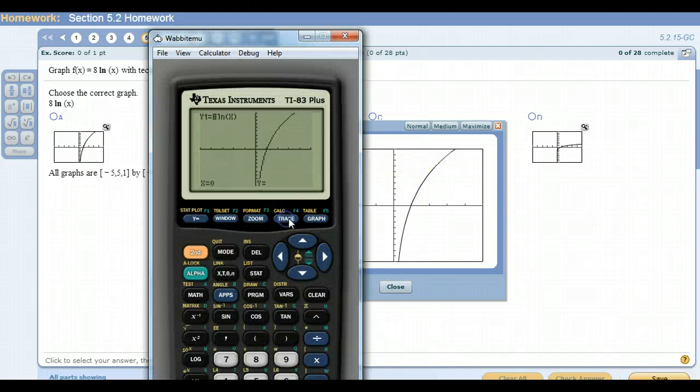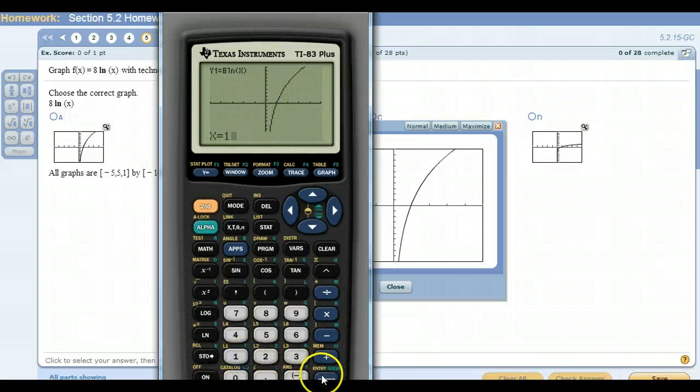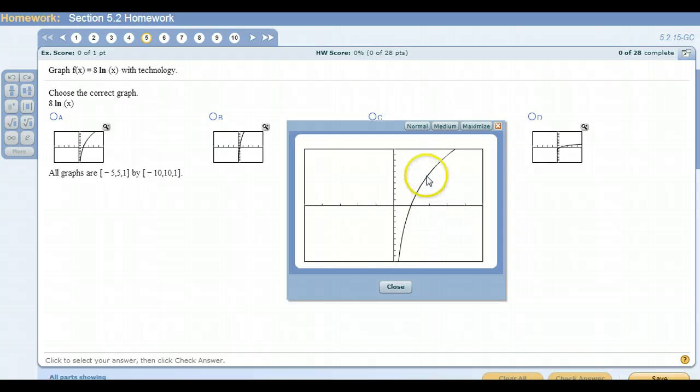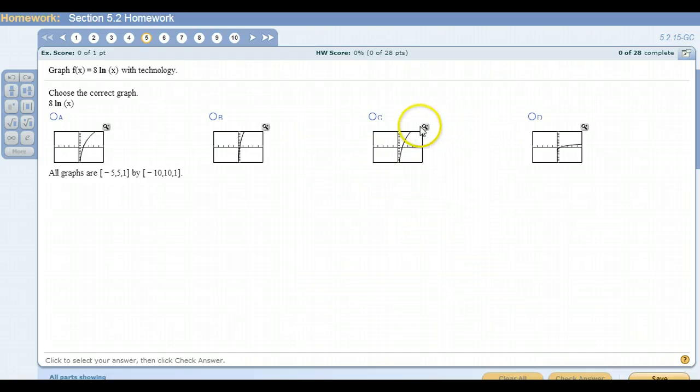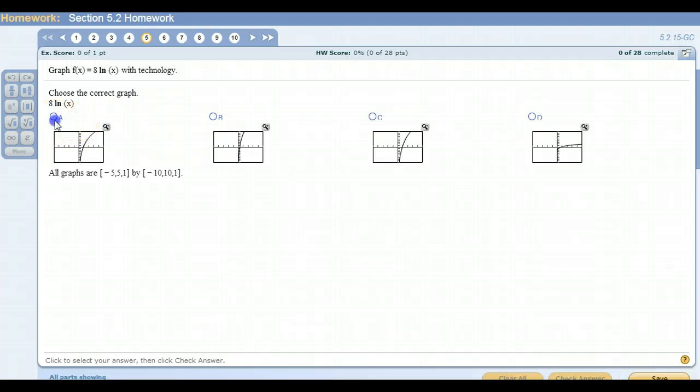On this one, when I hit trace, and I type in 1, right? I'm sorry, not 1, 2. When I hit 2, I get about 5.5. Okay. And remember with this one, we're getting about 5-something, 5 or 6. And with this other one, when we plug in 2, we're getting something close to 7. So that means our answer is going to be A.